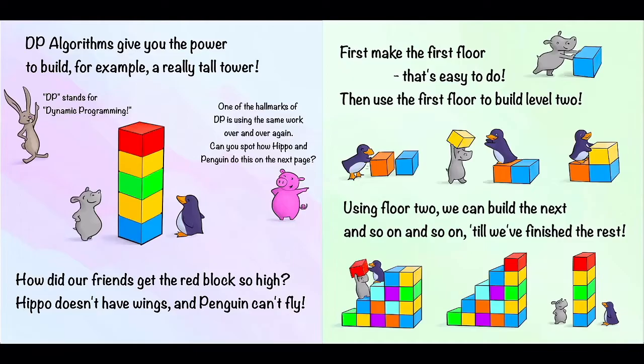So here's what they do. First make the first floor. That's easy to do. Hippo just pushes one block there to make the first floor. Then use the first floor to build level two. That is, we're going to use our ability to make the first floor by adding another little block here. And then Hippo and Penguin can use the first floor as a stepping stone to help put on the second floor. Using floor two we can build the next and so on and so on till we've finished the rest.